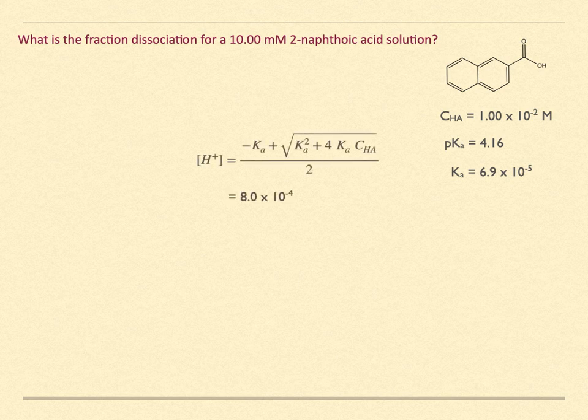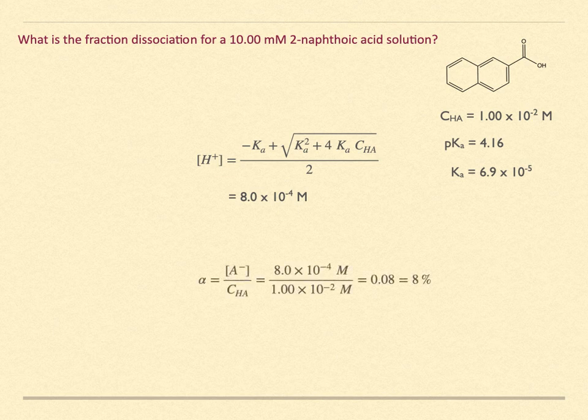Put in the values to the quadratic formula and find that the hydronium ion concentration is 8 times 10 to the minus 4 molar. We equate this to the conjugate base concentration, that of the 2-naphthenate ion. And this gives us a fraction dissociation of 0.08, or 8%.